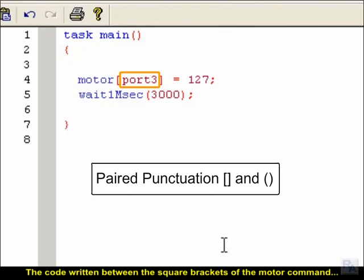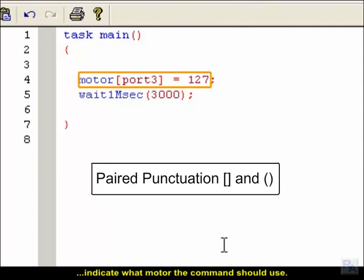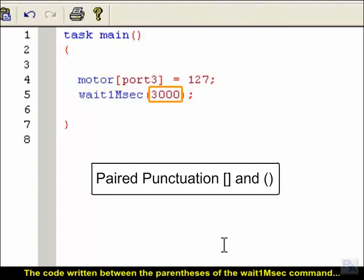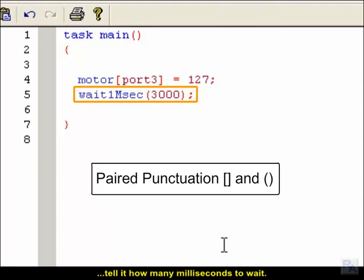The code written between the square brackets of the motor command indicate what motor the command should use. The code written between the parentheses of the wait1msec command tell it how many milliseconds to wait.